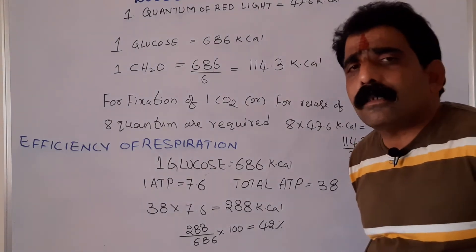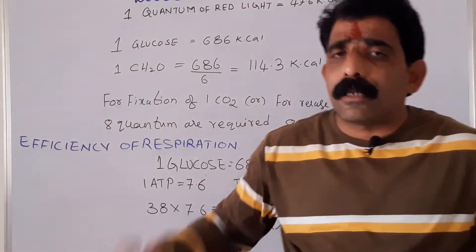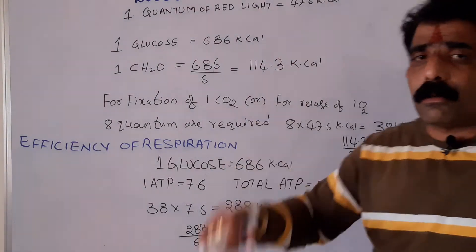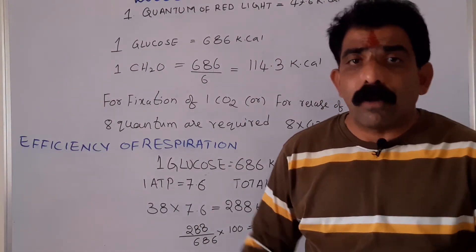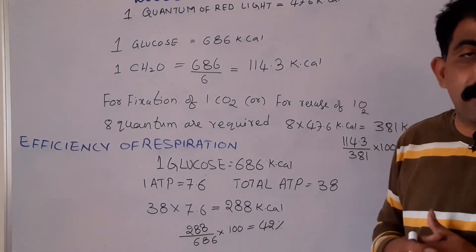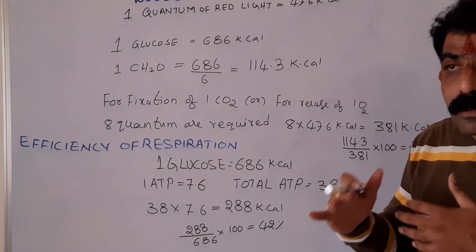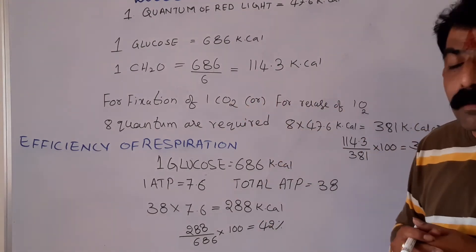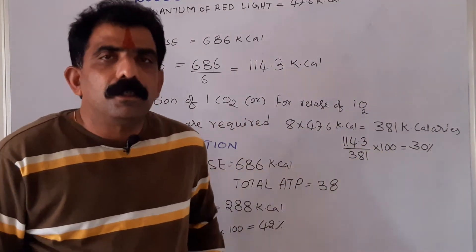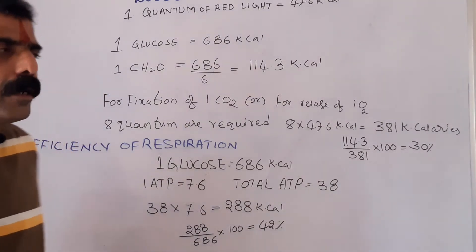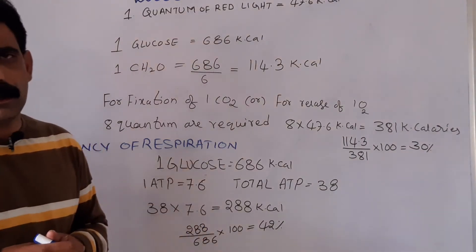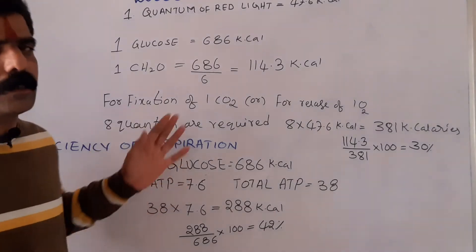Efficiency of photosynthesis is the fraction of radiant energy which is converted into chemical energy by the plants. Plants absorb 381 kcal of radiant energy to fix one carbon dioxide, but one carbon consists of only 114.3 kcal. The efficiency of photosynthesis is therefore only 30%.